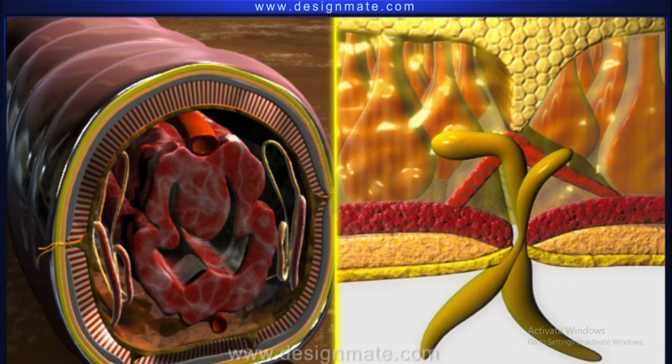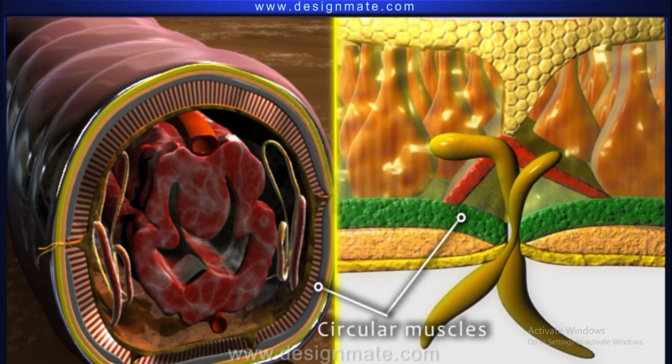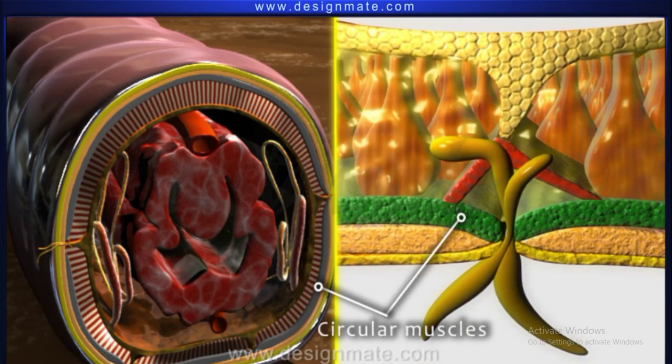Under the skin, there is a thin layer of circular muscles which run all around the worm's body.